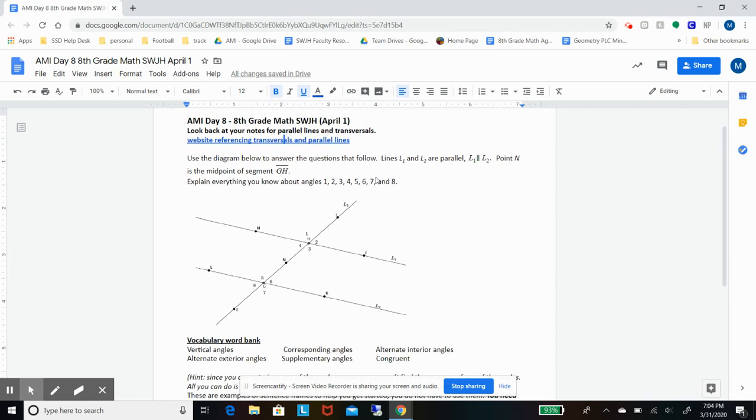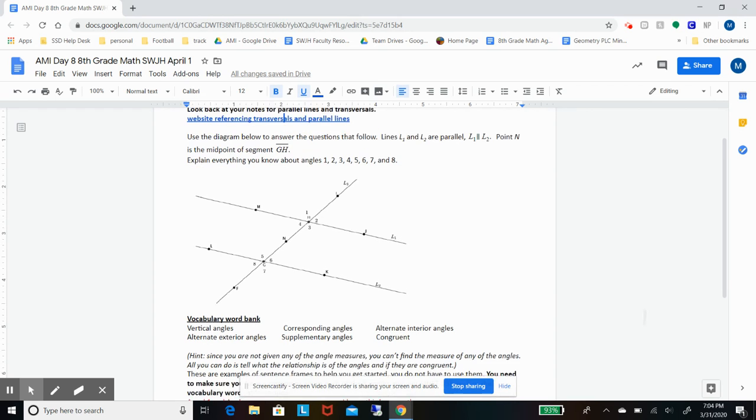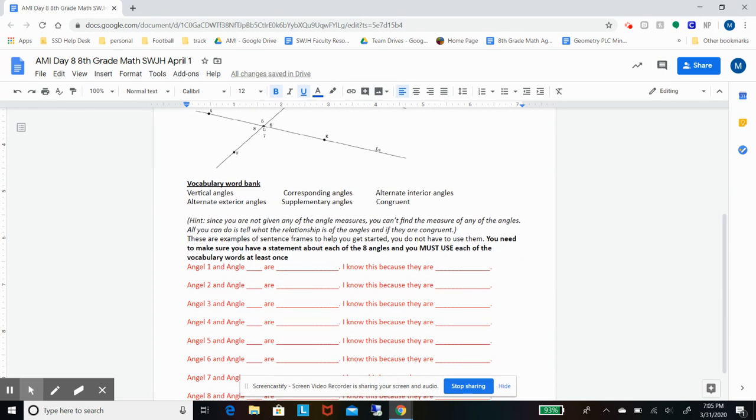Looking at the assignment, making sure that we know what we're trying to accomplish is we are trying to make a statement about each of the eight angles and we need to use each vocabulary word at least once.